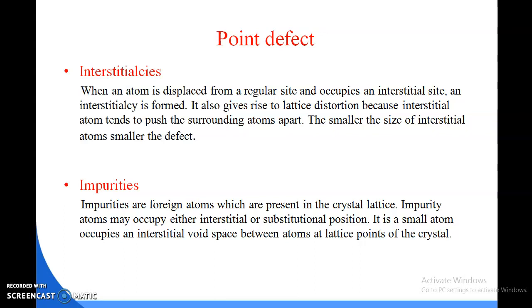The next point defect is impurities. Impurities are foreign atoms which are present in the crystal lattice. Impurity atoms may occupy either interstitial or substitutional position. A small atom occupies an interstitial void space between atoms at lattice points of the crystal. We are going to watch the impurities diagram.